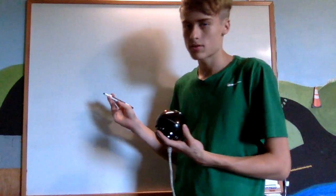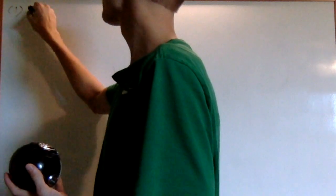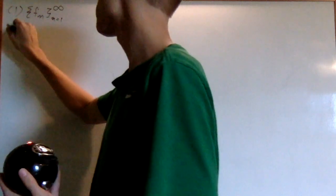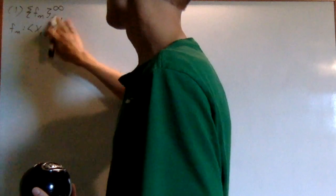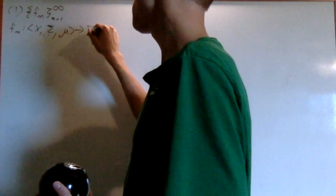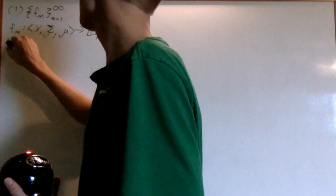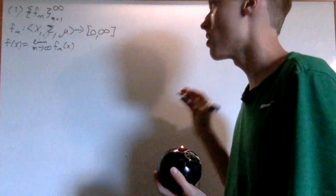First, we're going to need some prerequisites. First, if I have a sequence of measurable functions f_n from n equals 1 to infinity, where f_n maps from the measure space (X, Σ, μ) into the closed interval from 0 to infinity, then the function f(x) defined to be the limit as n goes to infinity of f_n(x) is also going to be a measurable function. So the limits of measurable functions are measurable.